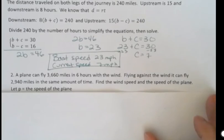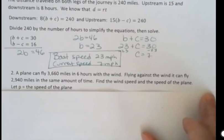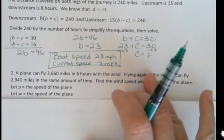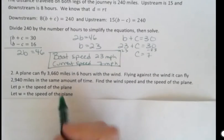That would be the speed of the plane without having any wind pushing it around. So I'm going to let p be the speed of the plane and w be the speed of the wind.